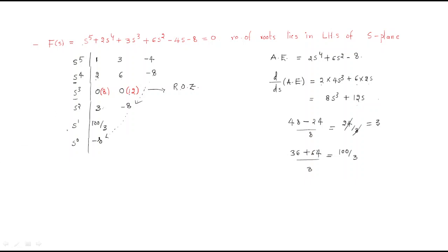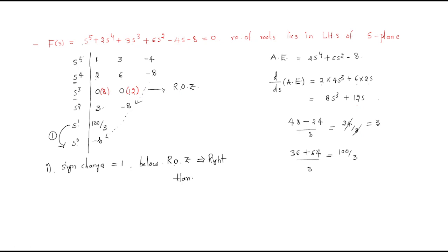Looking at the first column of the R-H table, there is one sign change — from s¹ to s⁰, where we have a negative value. This sign change equals 1, meaning there is 1 right-hand side pole. The auxiliary equation has order 4.